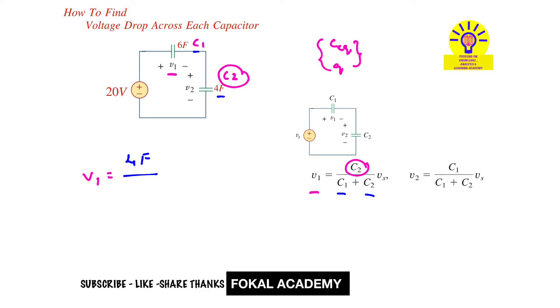Times the source voltage, which is 20 volts. 4 times 2 is 8, so V1 equals 8 volts. This is the voltage drop across C1 capacitor.